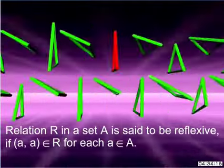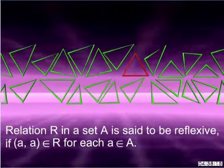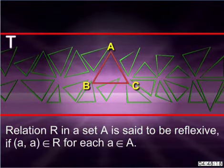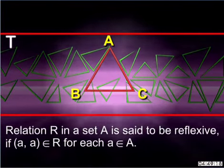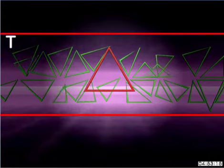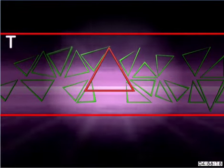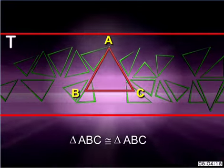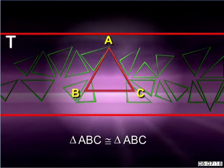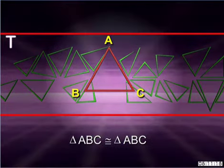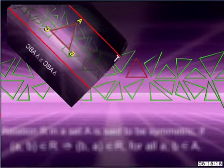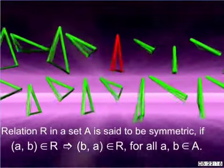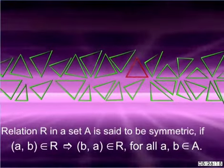A relation R in set A is said to be reflexive if every element of set A is related to itself. Let T be the set of all triangles in a plane and let triangle ABC belong to this set. Let the relation R stand for 'is congruent to.' As every triangle is congruent to itself, triangle ABC is congruent to triangle ABC. Therefore, the relation R is reflexive in set T. The relation R in set A is said to be symmetric if A is related to B implies that B is related to A, for all A and B belonging to set A.